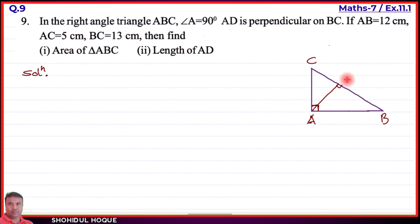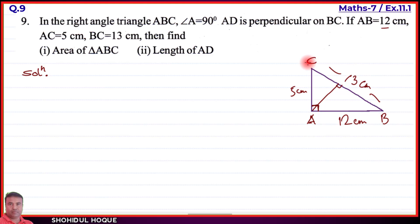Looking at the given values: AB equals 12 centimeters, AC equals 5 centimeters, and BC equals 13 centimeters. For triangle ABC, when angle A is 90 degrees, AB is the base and AC is the height — that is, the perpendicular. So base equals 12 cm and height equals 5 cm.